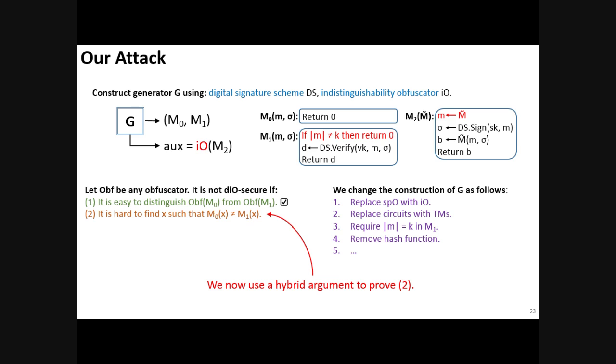Now, towards our attack, we do the following changes. Instead of using special purpose obfuscation, we use indistinguishability obfuscation to produce the auxiliary inputs. Furthermore, our generator produces Turing machines instead of circuits.